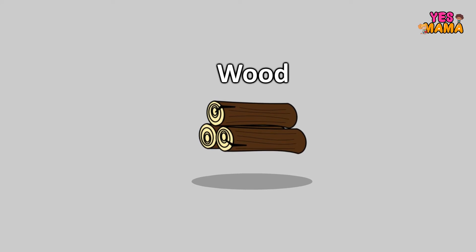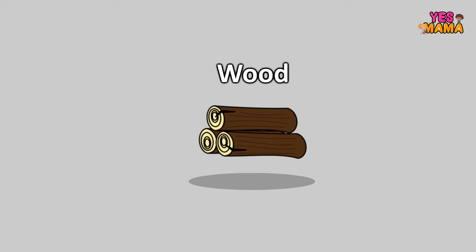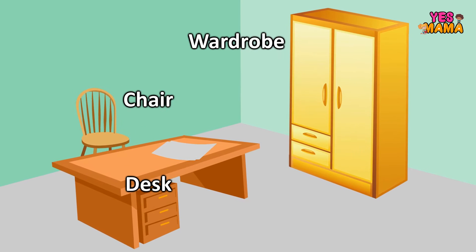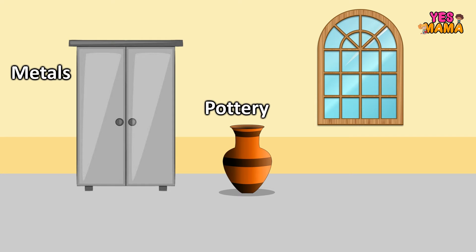We make use of wood obtained from plants to make different things like desks, chairs, wardrobes, etc. We also obtain paper from plants. We use rocks and minerals to make metals, pottery and glass.